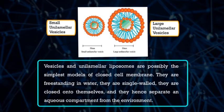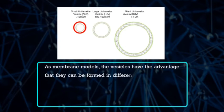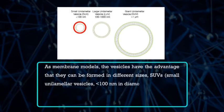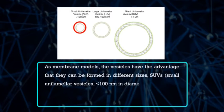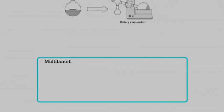As membrane models, vesicles have the advantage that they can be formed in different sizes. SUVs are small unilamellar vesicles which are less than 100 nm in diameter. LUVs, or large unilamellar vesicles, are less than 1000 nm in diameter. And GUVs, or giant unilamellar vesicles, are more than 1000 nm in diameter. Hence, it is possible to study effects of membrane permeability barriers and curvature using these models. Depending on the method of formation, one can obtain multilamellar or unilamellar liposomes of different sizes.